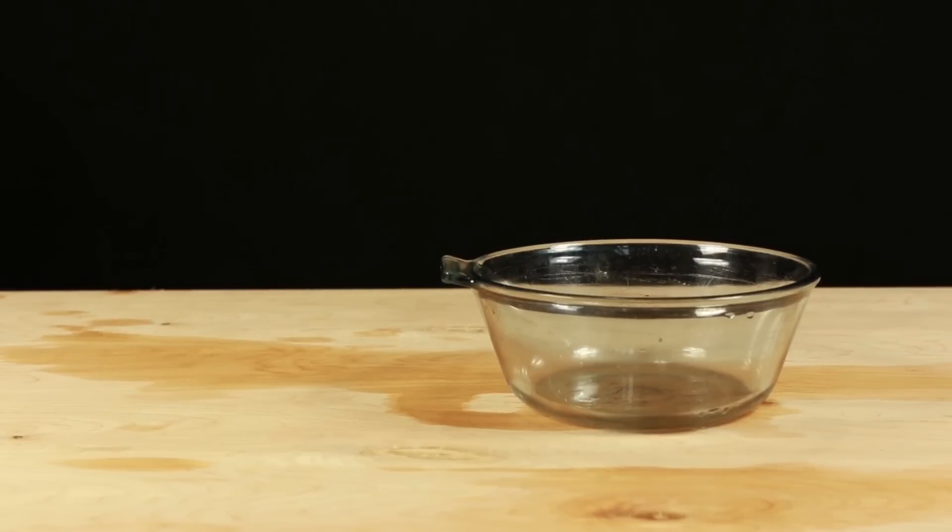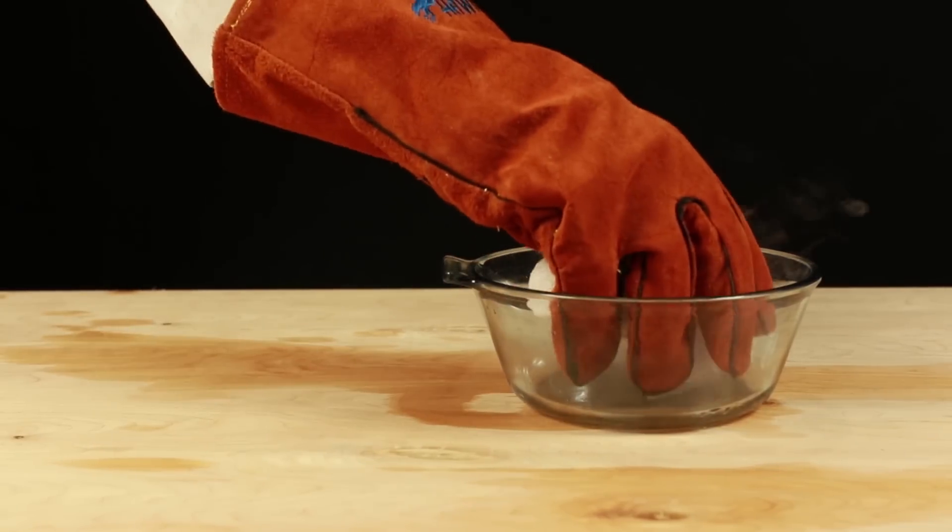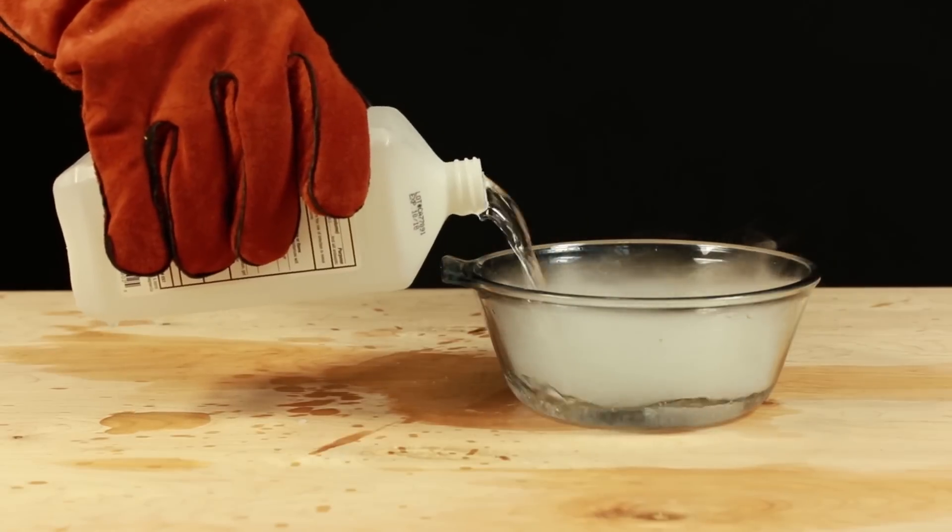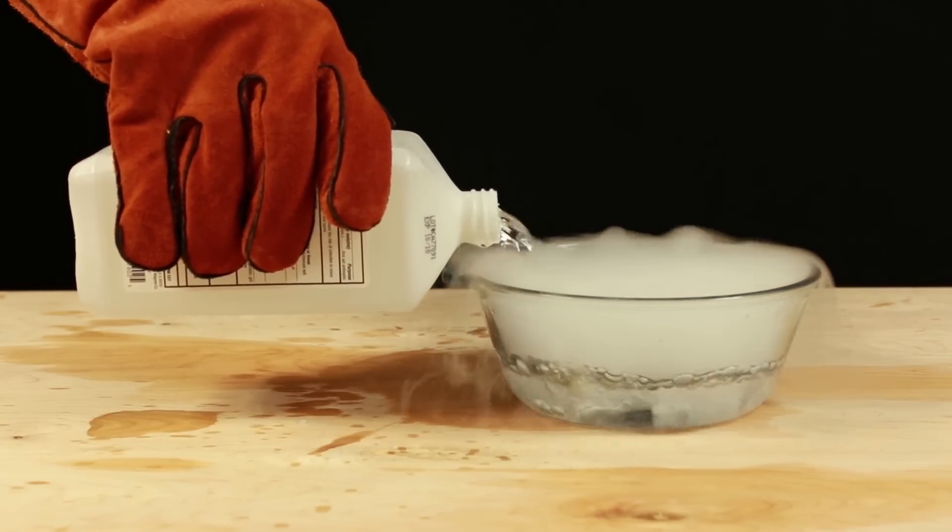Start by taking a heat resistant bowl and adding a couple large chunks of dry ice. Now fill the bowl two-thirds of the way full with 91% isopropyl alcohol.